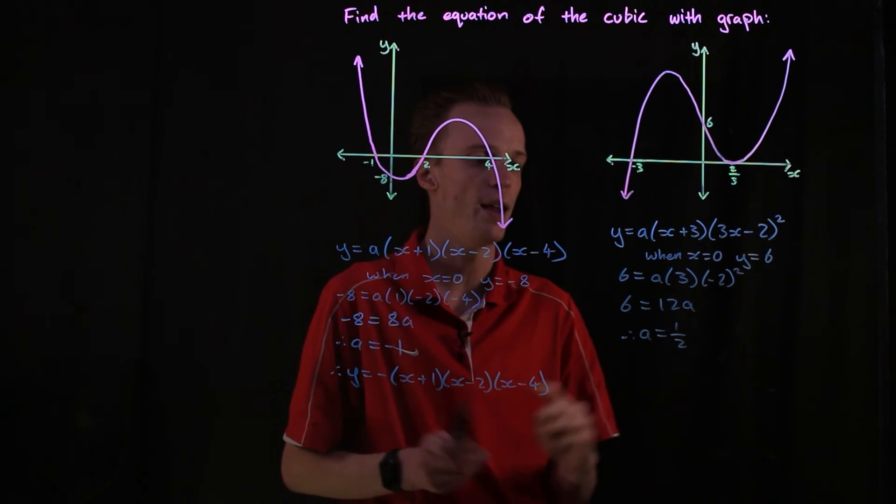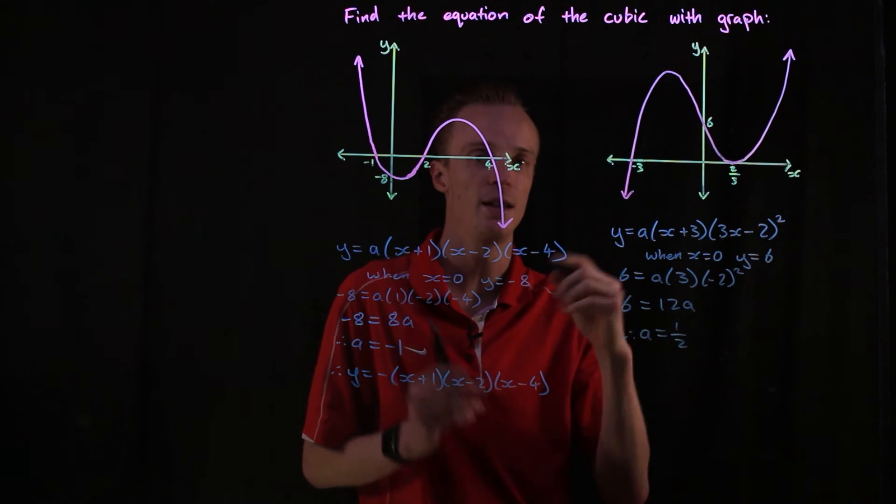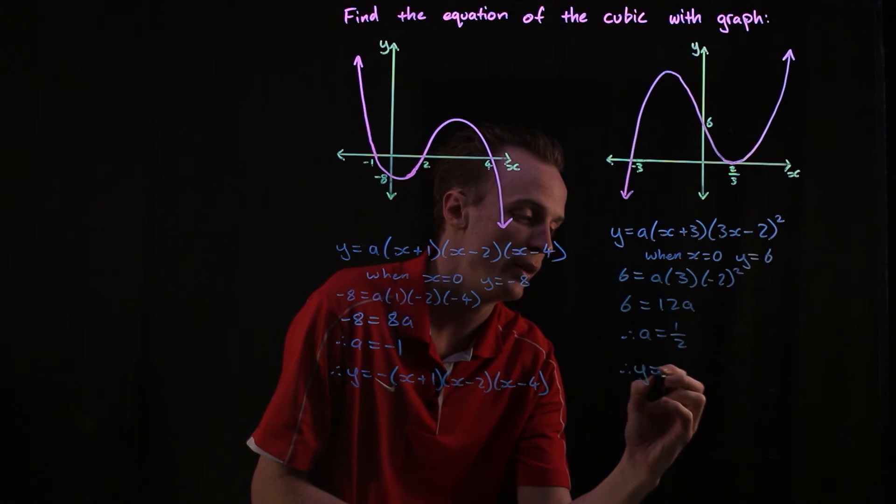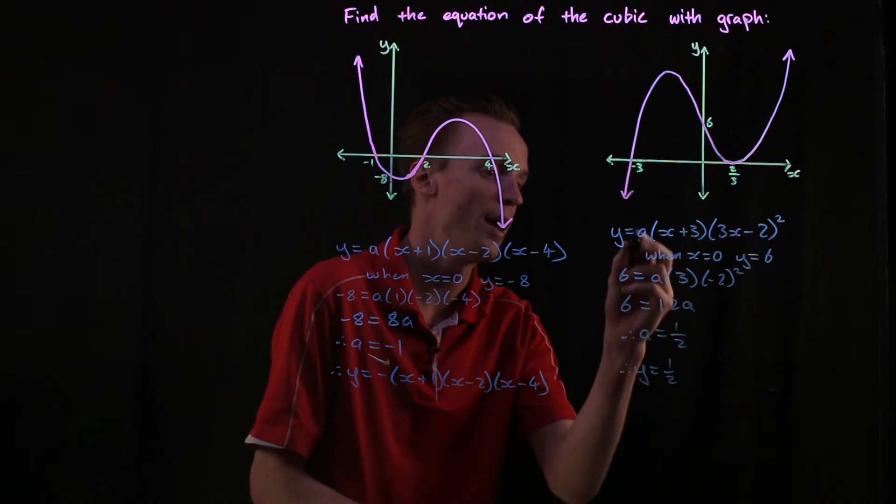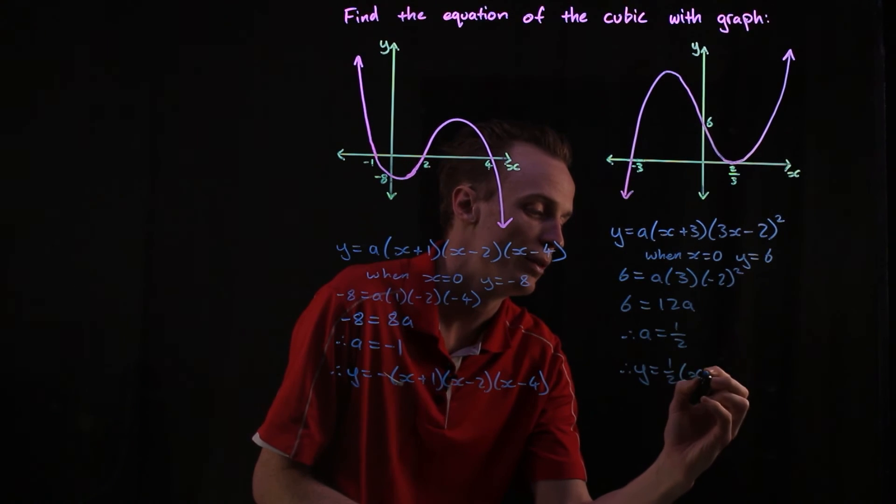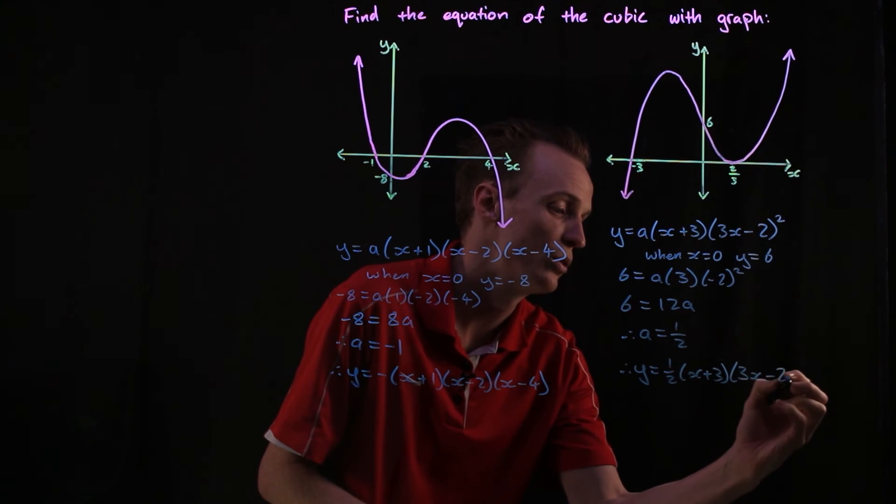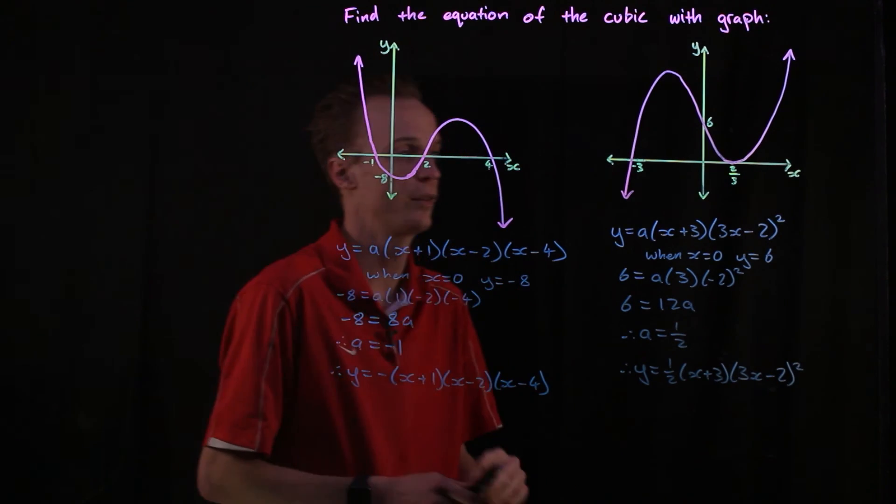Now because we've got our a value, we substitute that back into here and we've found the equation for our cubic polynomial. Therefore our y is equal to a half times x plus three times three x take two all squared like so.